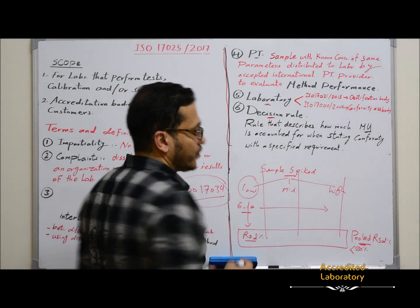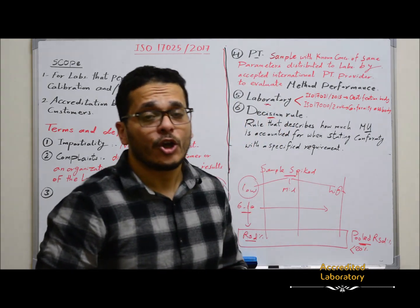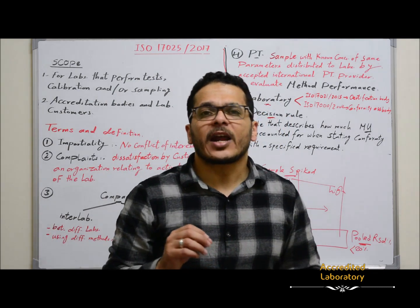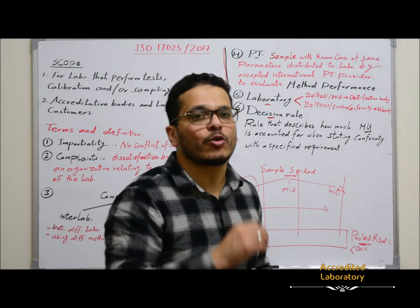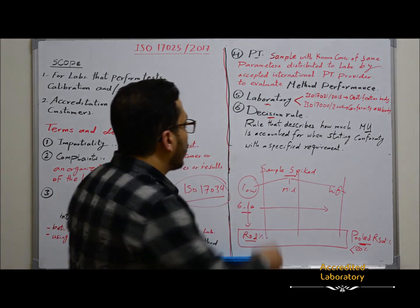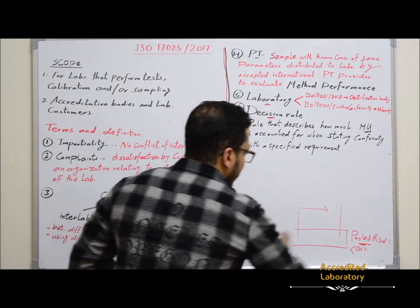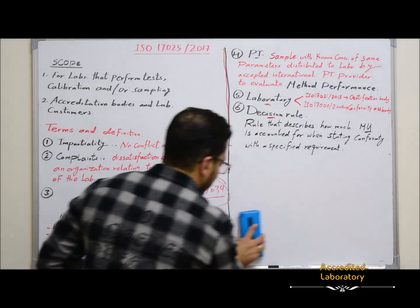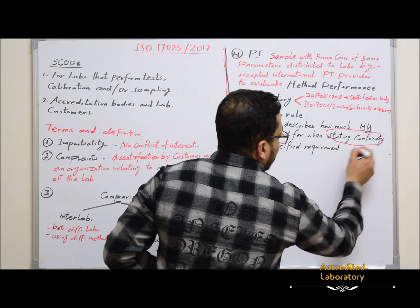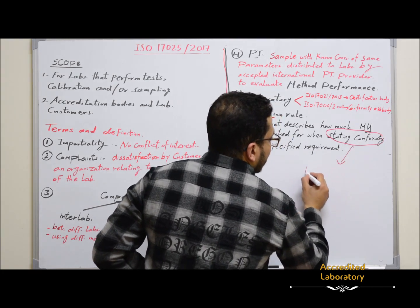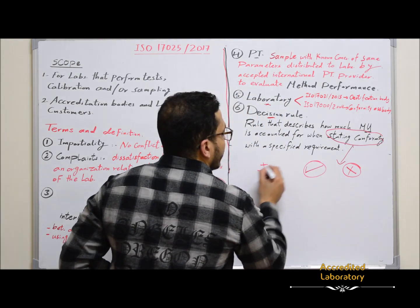Next, the decision rule — a new term added to this standard — which is the rule that describes how much measurement uncertainty is accounted for when stating conformity with a specified requirement. This means you will decide if the sample will be accepted or rejected after adding measurement uncertainty.